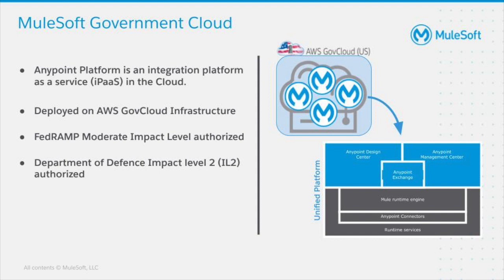AnyPoint platform is deployed on AWS Gov Cloud Infrastructure which is FedRAMP and Department of Defense compliant. FedRAMP is a government-wide program that promotes the adoption of secure cloud services across the federal government by providing a standardized approach to security and risk assessment for cloud technologies and federal agencies. FedRAMP's goal is to enhance the framework by which the government secures and authorizes cloud technologies. MuleSoft Government Cloud is FedRAMP moderate level authorized environment that enables government agencies to use AnyPoint platform in the cloud.